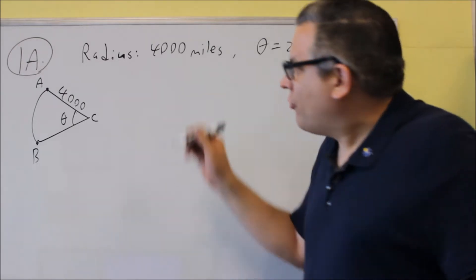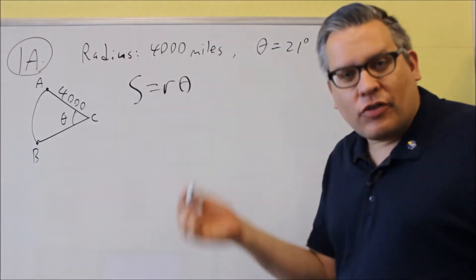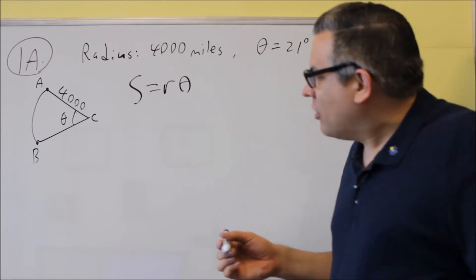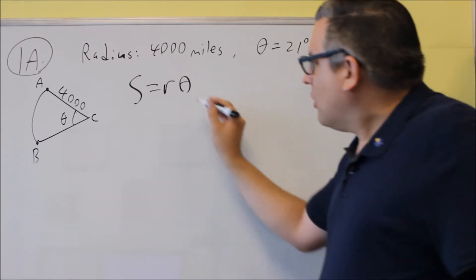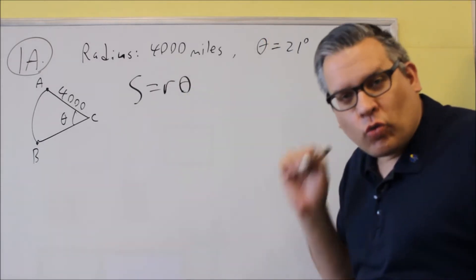Now, formula that you have to know for this one, in order to do arc length and area of a sector, which is what they're asking on this one, you need to use first S equals R theta. The main thing to remember about the theta is theta has to be in terms of radians.